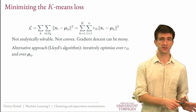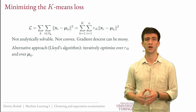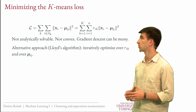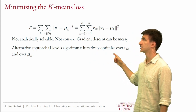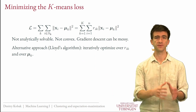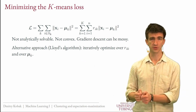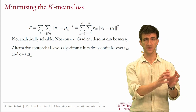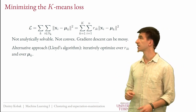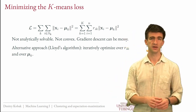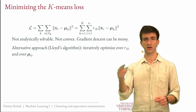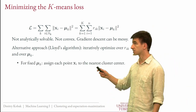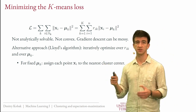The good news is that there is an alternative approach called Lloyd's algorithm that is very simple, intuitive, and works well. It iteratively optimizes over the cluster assignments r and the cluster means mu. First we find optimal mu's with the assignments fixed, then we fix the mu's and optimize the splitting of points into clusters. We keep repeating these two steps until convergence.